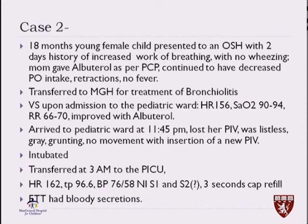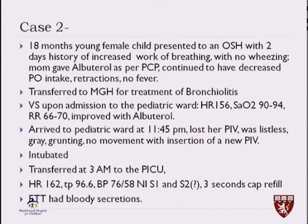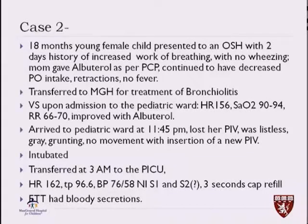The second case is an 18-month young child who presented to an outside hospital with a two-day history of increased work of breathing, and her PCP diagnosed bronchiolitis. He prescribed albuterol, which helped a little bit, but she had no fever and no retractions. Her vitals when she presented to the pediatric ward had elevated heart rate with tachypnea. When she arrived to the pediatric ward, she lost her peripheral IV and was noted to be very listless, gray, grunting with no movement. With insertion of a new peripheral IV, she was intubated on the ward and transferred to the PICU for shock.